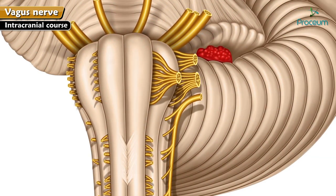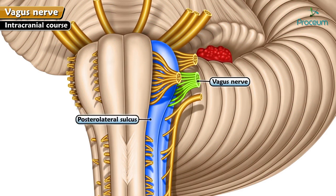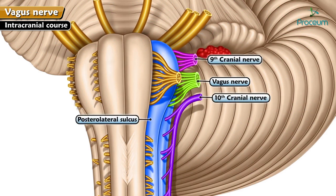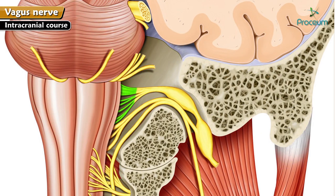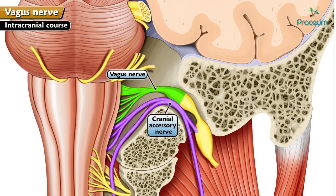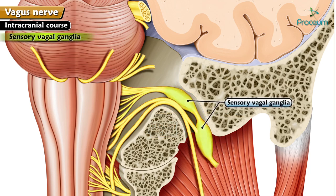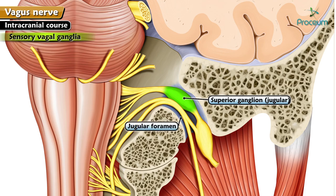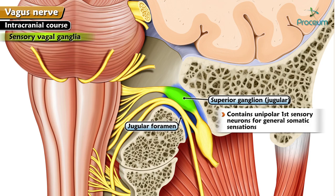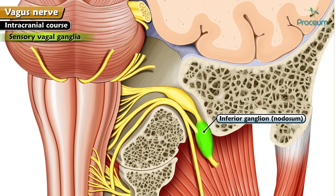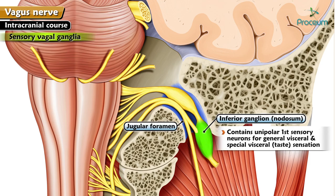The vagus nerve arises from the posterior lateral sulcus between the 9th and 10th cranial nerves. After its origin, it passes along with the cranial accessory nerve towards the jugular foramen to exit from the cranial cavity. The superior ganglion or jugular is located in the jugular foramen and contains unipolar first sensory neurons for general somatic sensations. The inferior ganglion or nodosum is located below the jugular foramen and contains unipolar first sensory neurons for general visceral and special visceral or taste sensation.